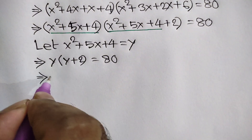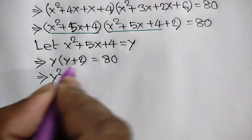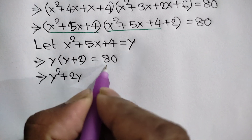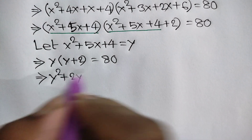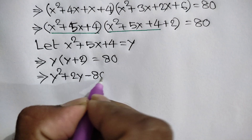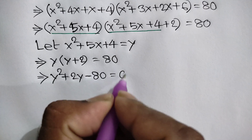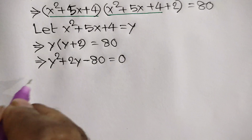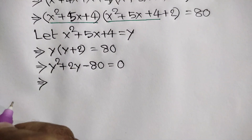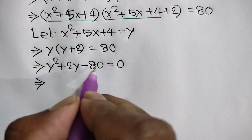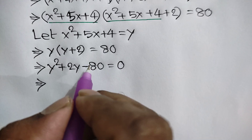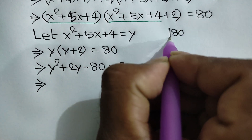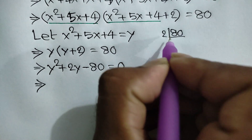Expanding: y · y is y², and y · 2 is 2y. Taking 80 to the left side gives y² + 2y − 80 = 0.